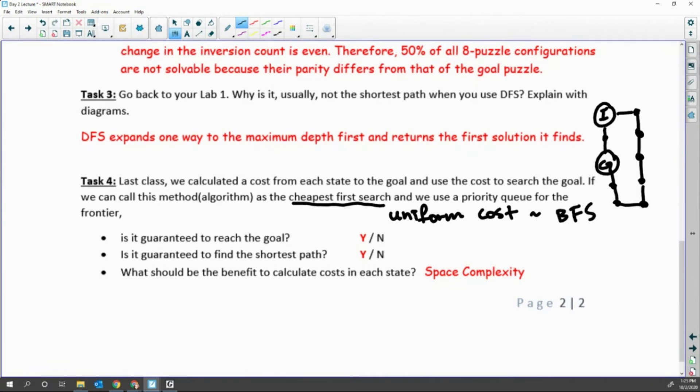Then what should be the benefit? It is space. So when we start from the initial node, if we have the path cost, some path cost is short, some path cost is long before we reach to the goal. In this case, uniform cost is checking the total cost.